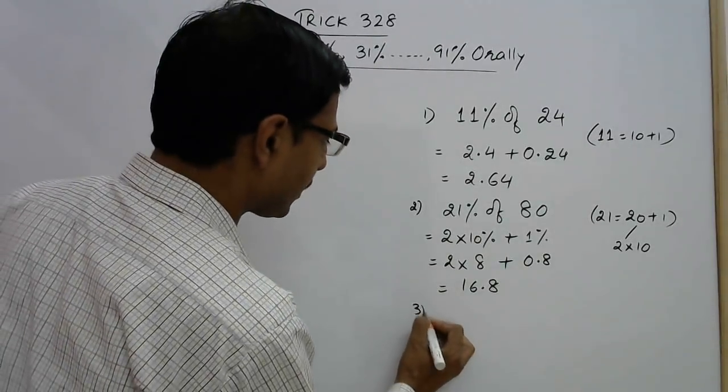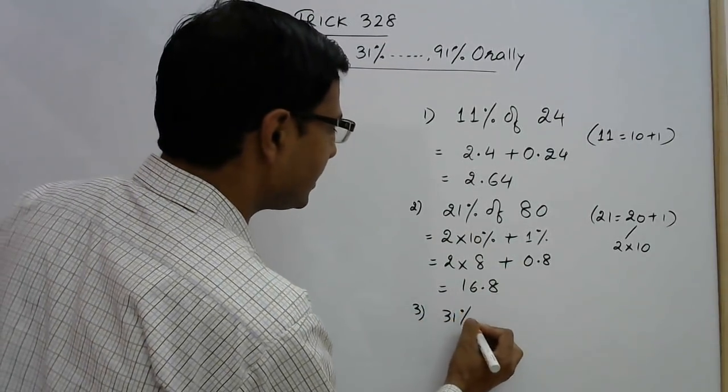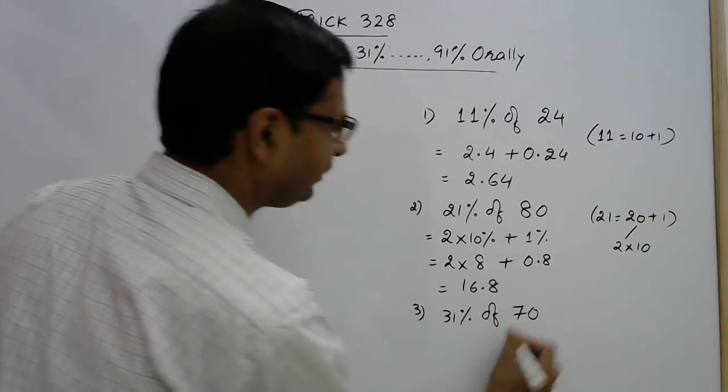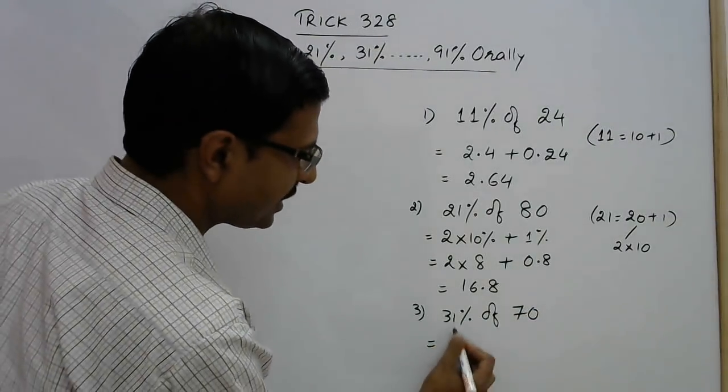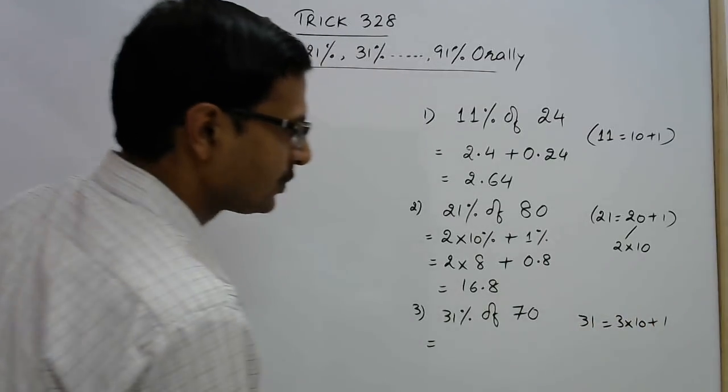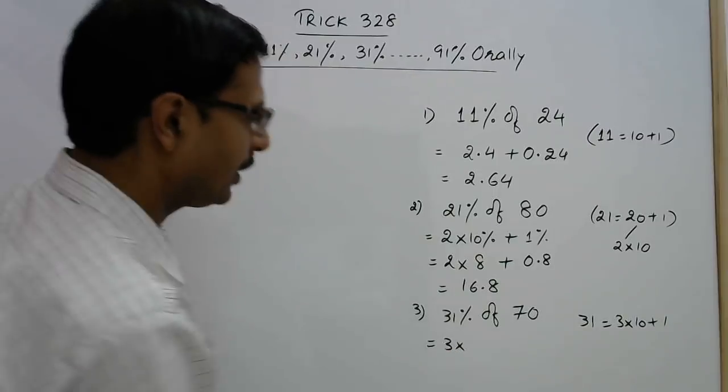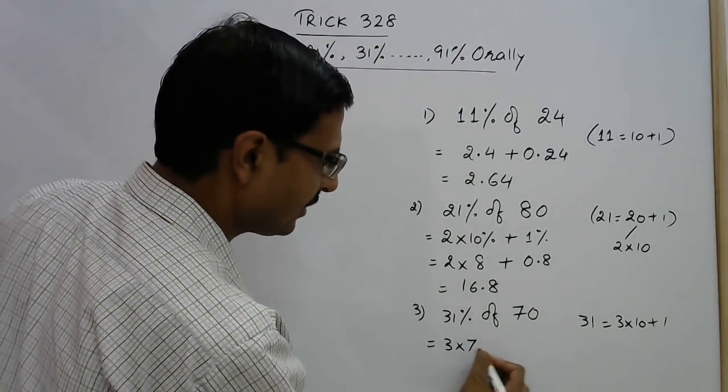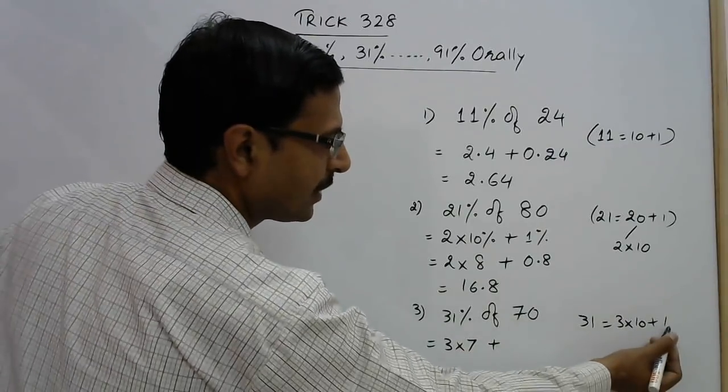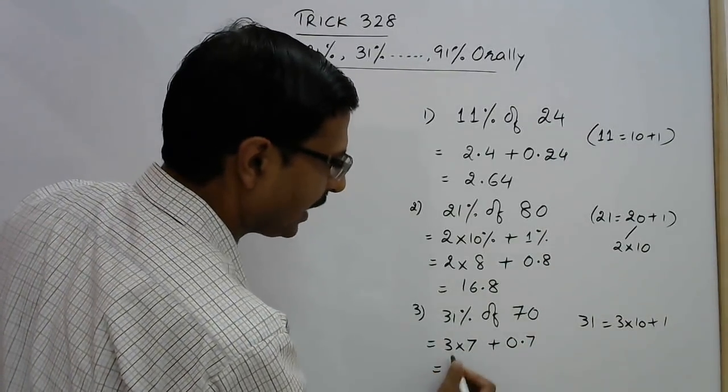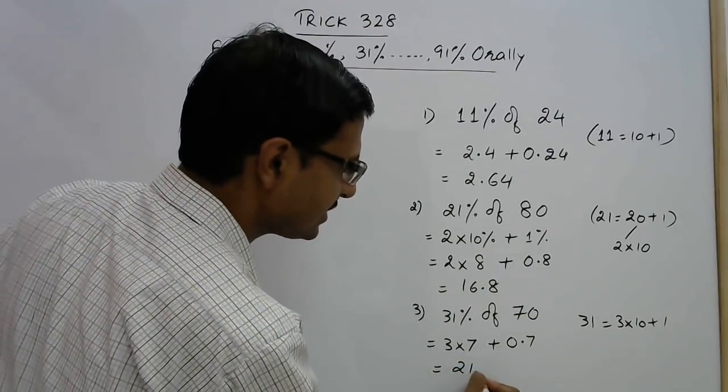Now let us demonstrate these steps for another question. This time we have 31 percent of some other number, this time the number is 70. See 31 percent, 31 is basically 3 into 10, 30 plus 1. So what we do is 3 into 10 percent. 10 percent is 1 digit from the right side, this is 7, and plus 1 percent, 2 digits from the right side, 0.7. So very simple, answer is 21.7.